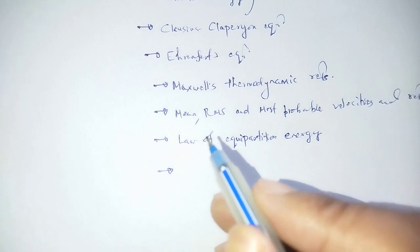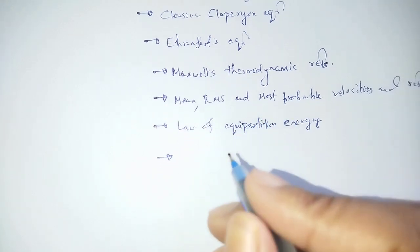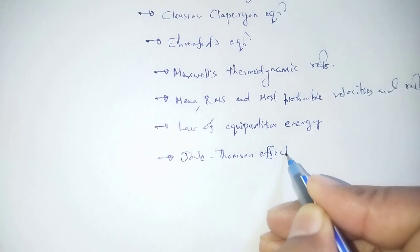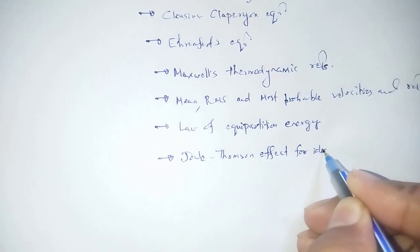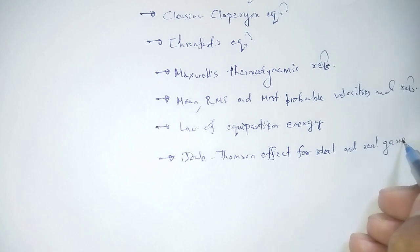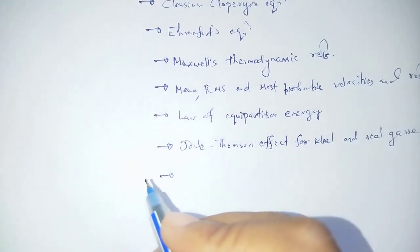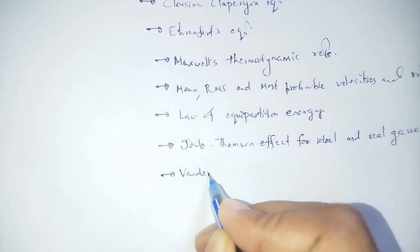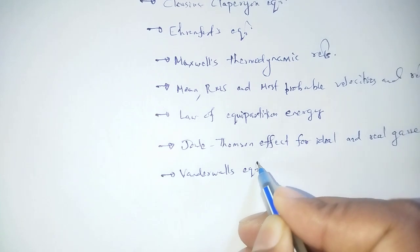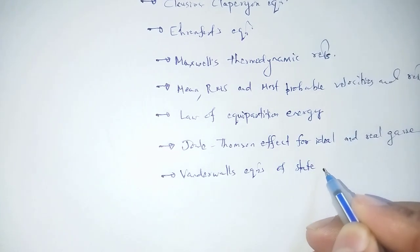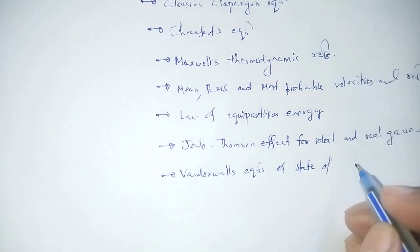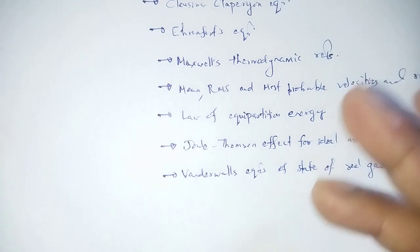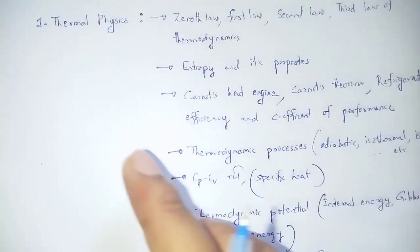The Joule-Thomson effect for ideal and real gases, and Van der Waals equation of state for real gases — including corrections. This completes the thermal physics section.